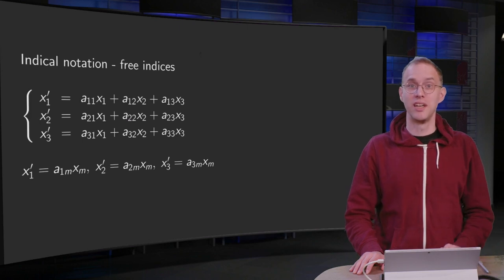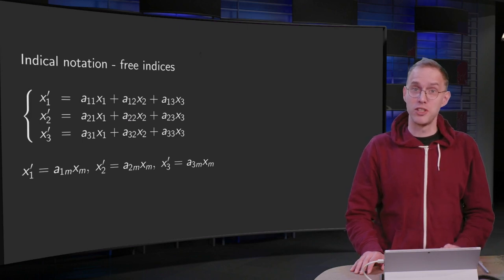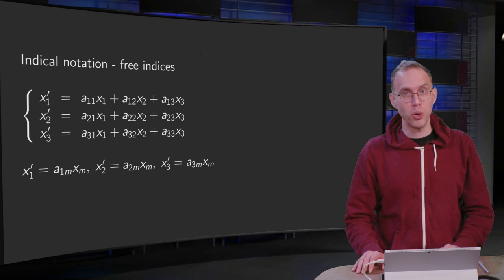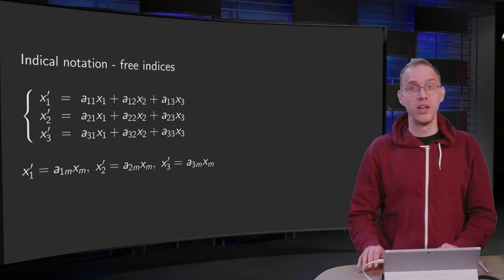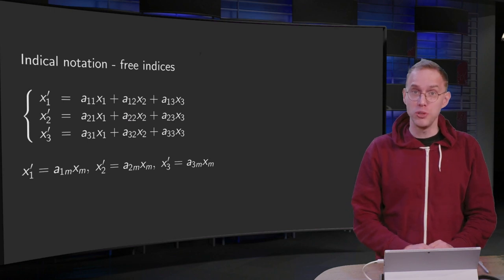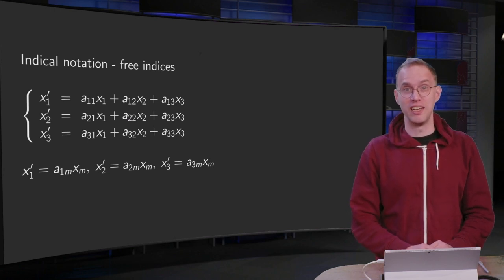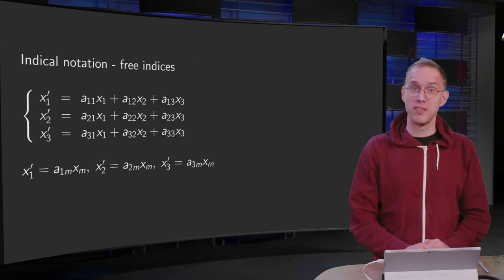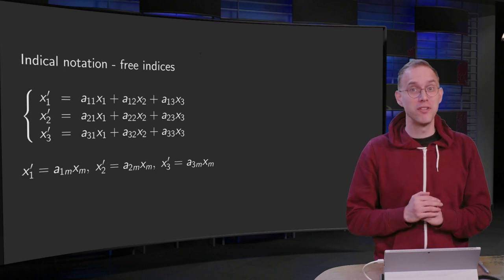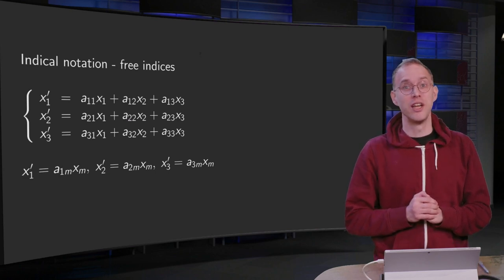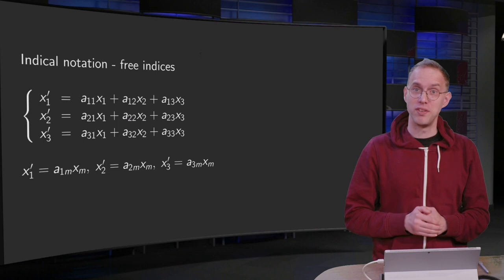Index notation allows us to abbreviate sums so we can shorten expressions, and it can do even more. We can reduce the number of equations we need greatly—we can, for example, write one equation instead of nine. How do we do that? We use free indices. You will learn all about those in this video.